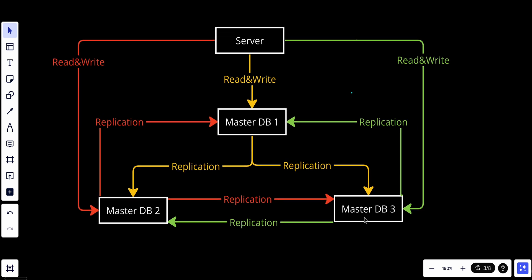It looks quite complicated. We will have a data conflict problem, because master one tries to replicate to master two and master two will replicate back to master one. If both of them edit the same data at the same time and try to replicate to each other, we will have a conflict.